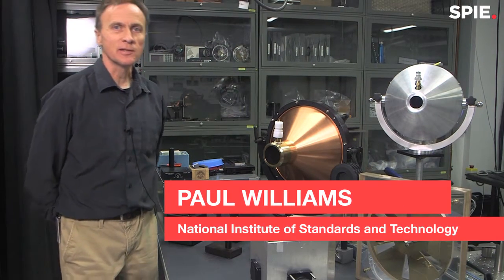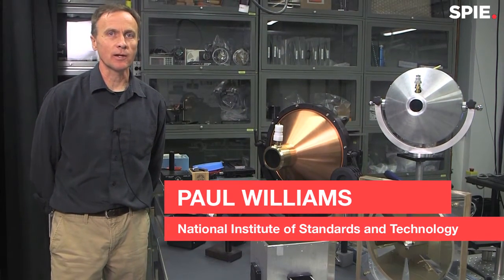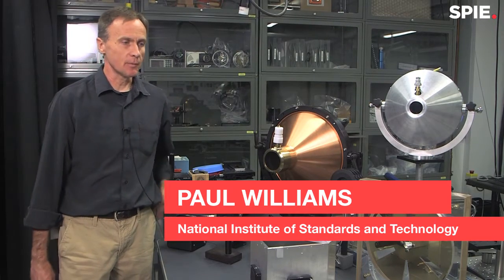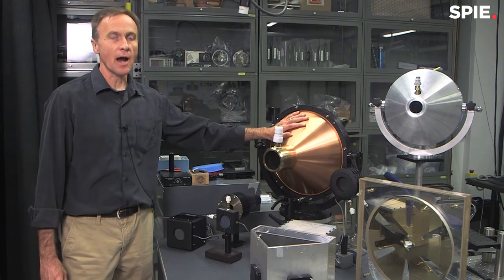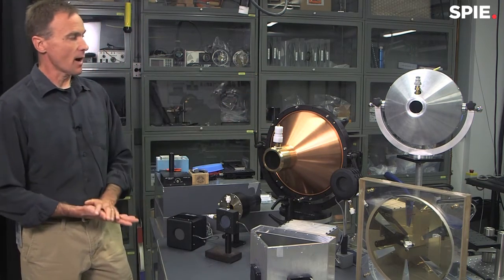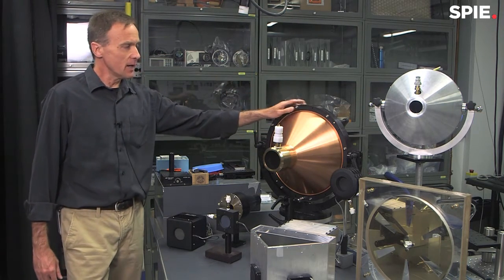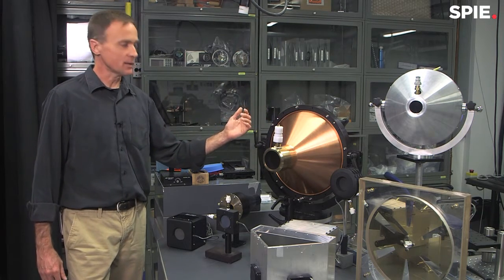Hi, I'm Paul Williams, a physicist here at NIST. I work in the laser radiometry lab as well. And I want to talk about instruments for measuring higher power laser power. This, for example, is a flowing water power meter. It measures up to 25 kilowatts.